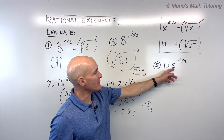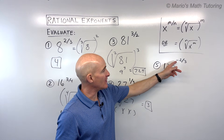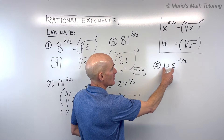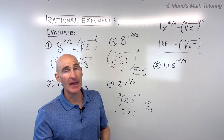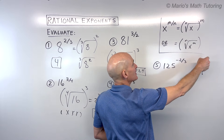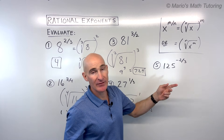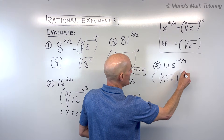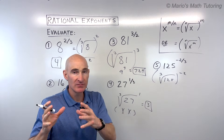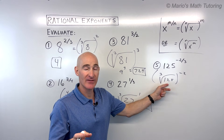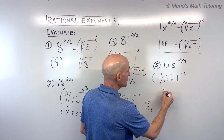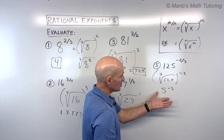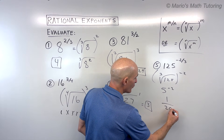For number 5, we've got 125 to the negative two-thirds power. Some students think a negative exponent means the answer is negative — not necessarily. This is a positive number; the negative exponent tells us to take the reciprocal. The cube root of 125 is 5, because 5 times 5 times 5 is 125. Then 5 squared is 25, but the negative makes us take the reciprocal, so the answer is 1 over 25.